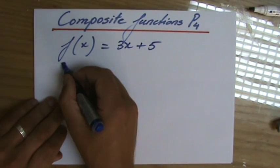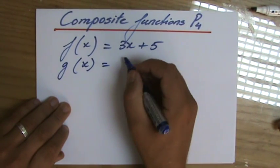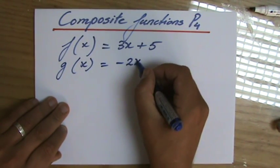Okay, and let's say I have another function, g(x), and that equals, I don't know, minus 2x plus 11.